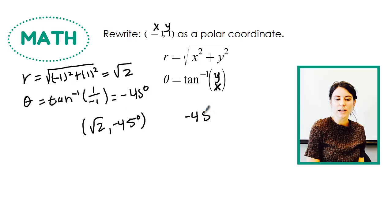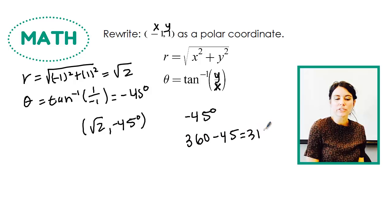So -45, if I want to find its coterminal angle, so if I want to figure out where it's positive and less than 360, I'd take 360 - 45. That gives me 315 degrees.